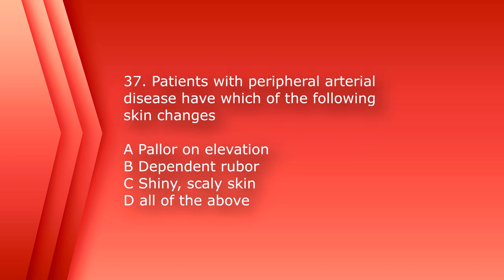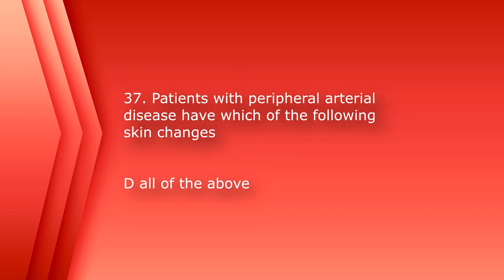Number 37: patients with peripheral arterial disease have which of the following skin changes? A. Pallor on elevation, B. Dependent rubor, C. Shiny scaly skin, or D. All of the above. The answer is D, all of the above.